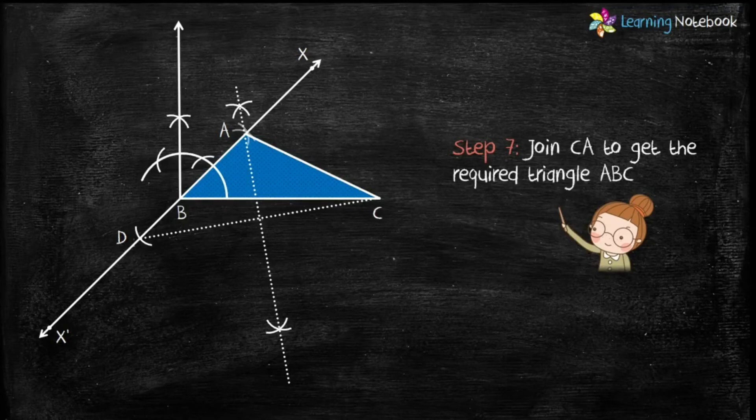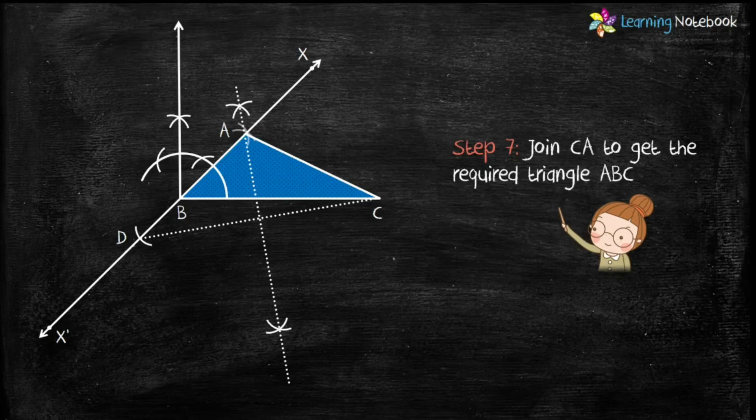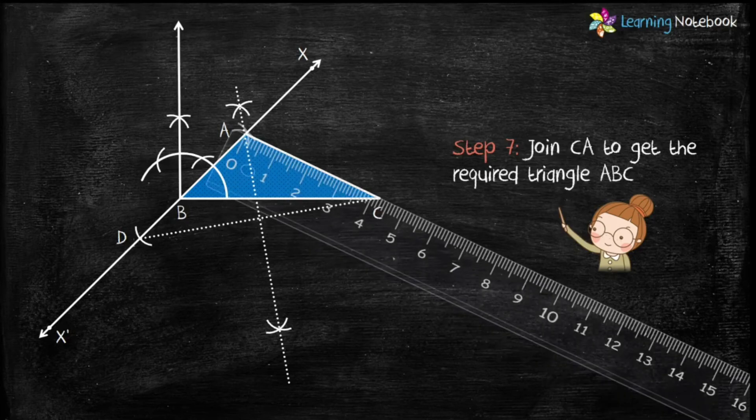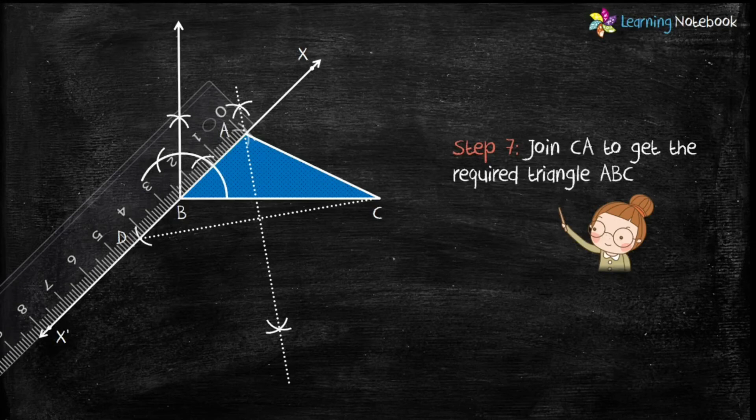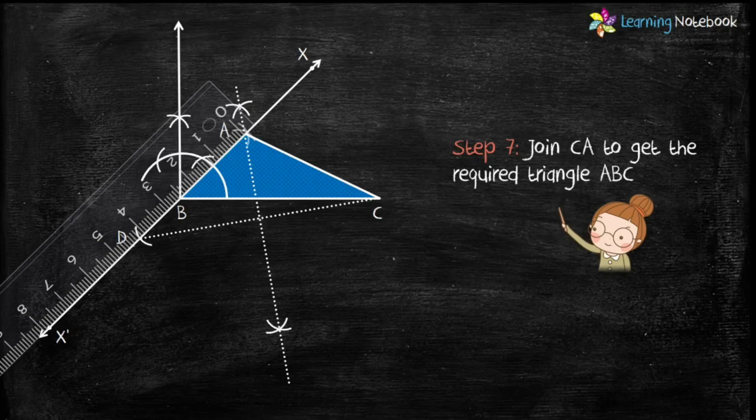You must measure the length of AB and AC. The difference of their length should be equal to 1.6 cm. Then only this construction would be correct. So students let's measure AB and AC. AC equals to 4.2 cm and AB equals to 2.6 cm. So AC minus AB equals to 1.6 cm. Therefore students we can say that this construction is correct.